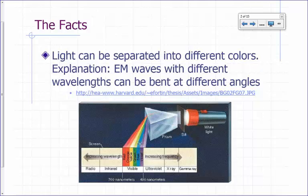And remember the wave model of light allows us to explain this. We say each color is associated with a different wavelength. So waves with different wavelengths are bent at different angles.